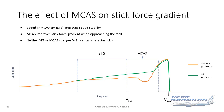As speed reduces back to VSW, MCAS starts to kick in, blended away from speed trim at around about the stall warning speed. MCAS improves the stick force gradient when approaching the stall — it removes that dip you see in the stick force curve and keeps the stick force gradient positive. Neither STS nor MCAS changes the stall speed or stall characteristics; it's all just affecting the stick force gradient before the stall break.